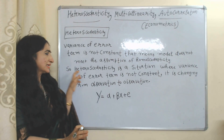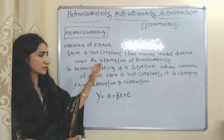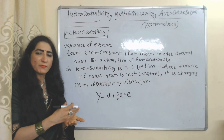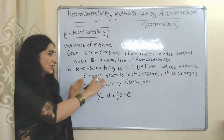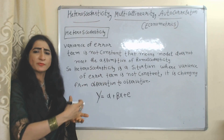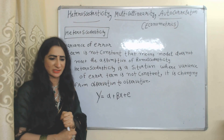We can say that heteroskedasticity is a situation where the variance of error terms is not constant — it is changing from observation to observation.